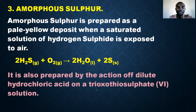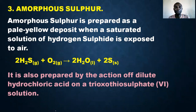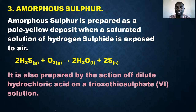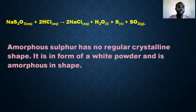Amorphous sulfur still contains eight atoms of sulfur in one molecule. It can also be prepared by the action of dilute hydrochloric acid on a sodium thiosulfate solution. Look at the reaction — the sulfur formed in this reaction is amorphous sulfur.